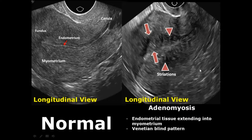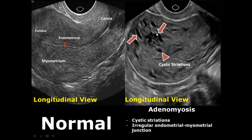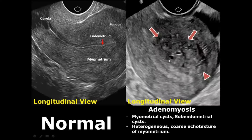Adenomyosis is the presence of endometrial tissue within the myometrium. It has a typical appearance called the Venetian blind pattern, which has alternate bright and dark bands present in the myometrial area. It can also have cystic striations as well as an irregular endometrial and myometrial junction. Myometrial cysts and subendometrial cysts can also be seen.